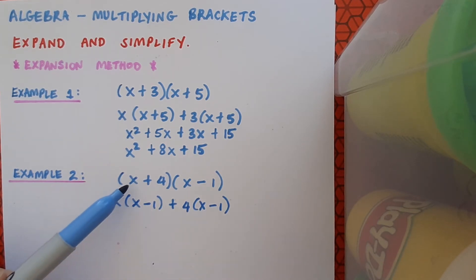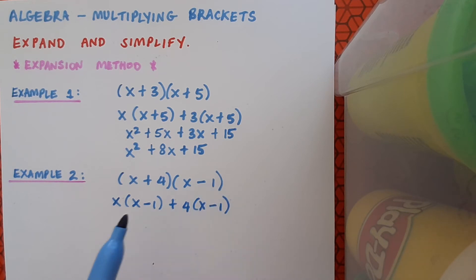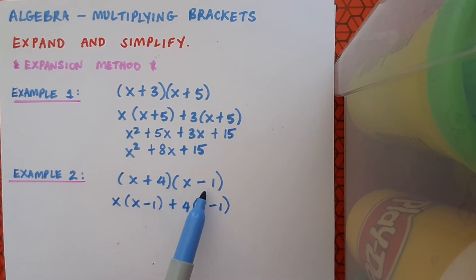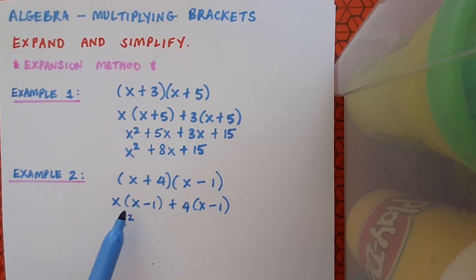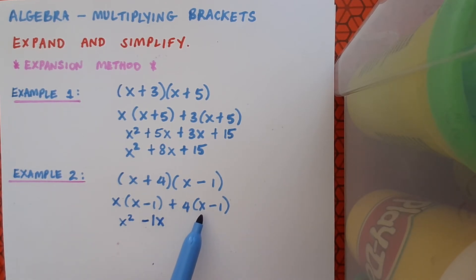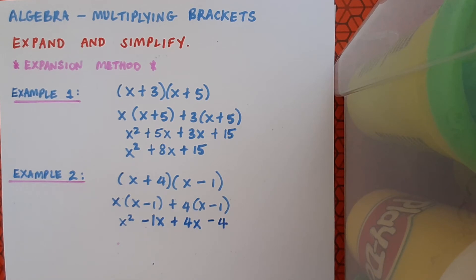So the x from the first bracket must multiply by the second bracket — x bracket x minus 1 — and the plus 4 from the first bracket must also multiply by the entire second bracket, so plus 4 by x minus 1. Now I can begin to multiply as normal: x by x gives x squared, x by minus 1 gives minus 1x, plus 4 by x gives plus 4x, and plus 4 by minus 1 gives minus 4. I've finished expanding.